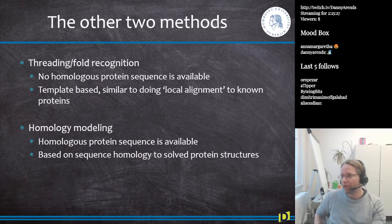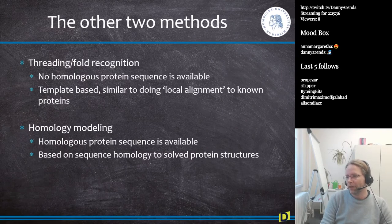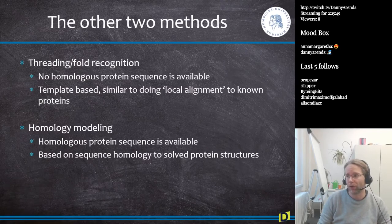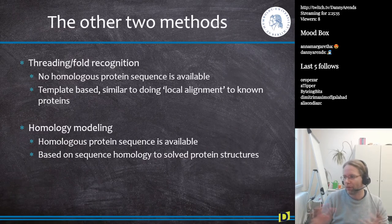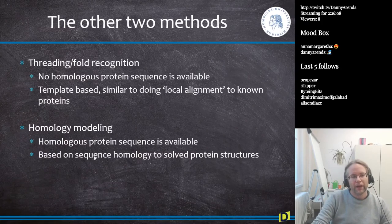There are two other methods for protein prediction. One of them is threading or fold recognition. This can be used when there is no homologous protein sequence available. It is a template-based method, similar to doing local alignment to known proteins. What it does is chop the protein up into small pieces, and for each piece it tries to find the best matching protein in the database, then uses that structure to build up a larger structure from the individual parts.